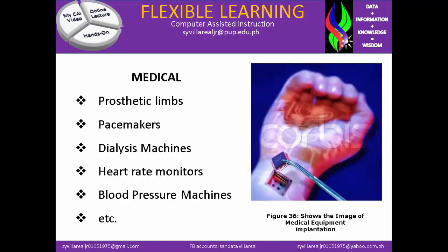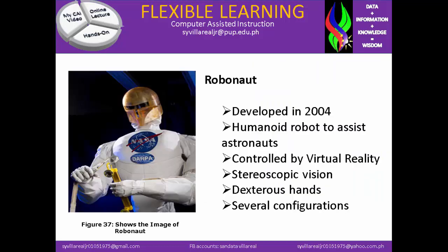In medical, it helps in terms of prosthetic limbs, pacemakers, dialysis machines, heart rate monitors, blood pressure machines, etc. Figure 36 shows the image of medical equipment implantation. Figure 37 shows the image of Robonaut. Robonaut was developed in 2004 as a humanoid robot to assist astronauts, controlled by virtual reality. It also features stereoscopic vision, dexterous hands, and several configurations.